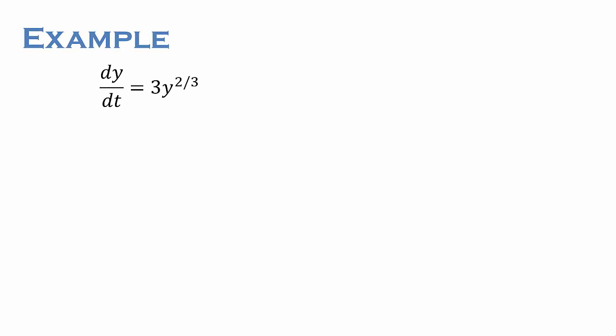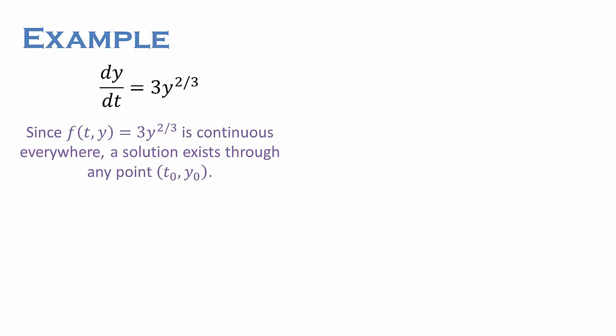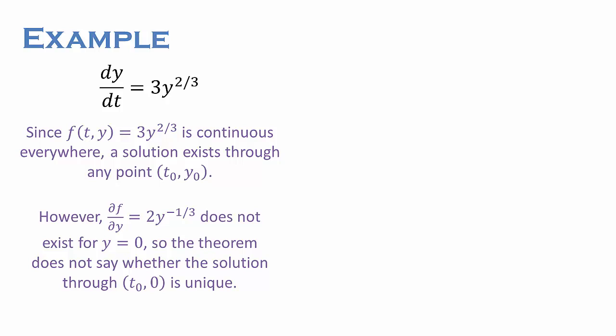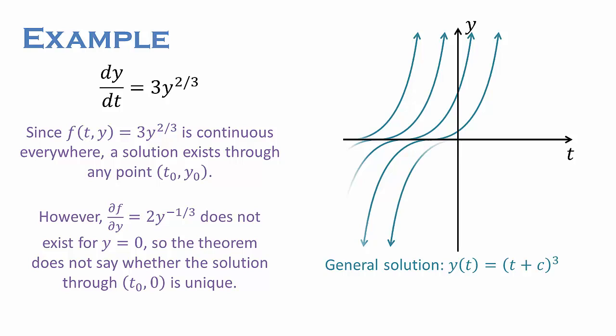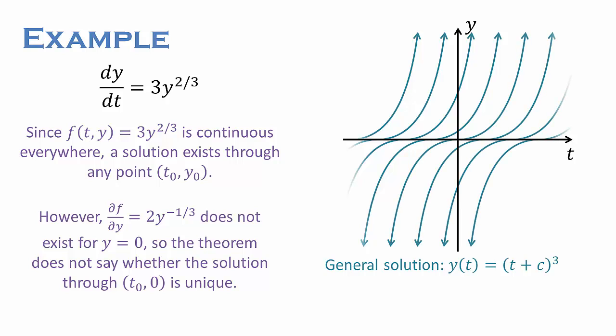We conclude with one more example. Consider the differential equation dy/dt = 3y^(2/3). Since the right-hand side f(t, y) = 3y^(2/3) is continuous everywhere, a solution exists through any point (t0, y0). However, the partial derivative of f with respect to y is 2y^(−1/3), which does not exist when y = 0. So the theorem does not say whether the solution through any point (t0, 0) is unique. We find that the general solution is y(t) = (t + c)^3 for some constant c. Yet there is also an equilibrium solution y = 0. Thus, the solution through any point on the t-axis is not unique.